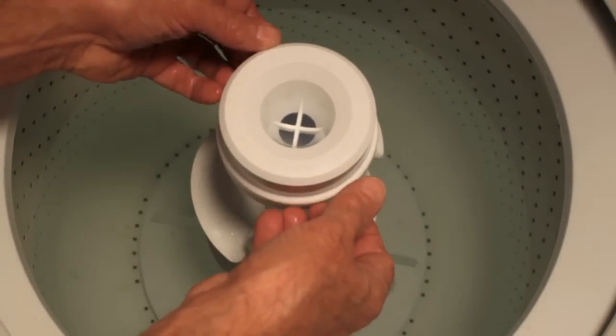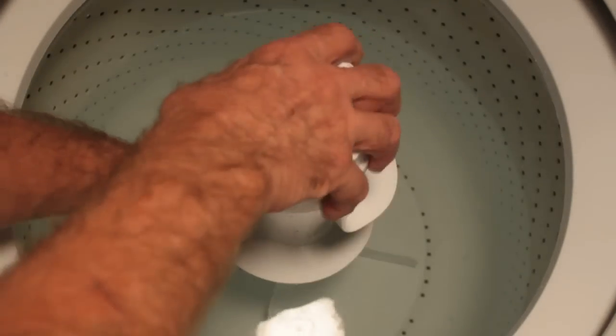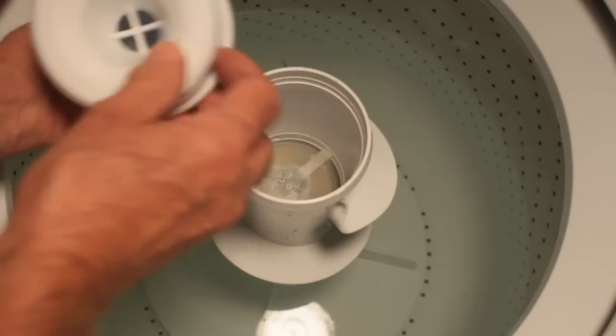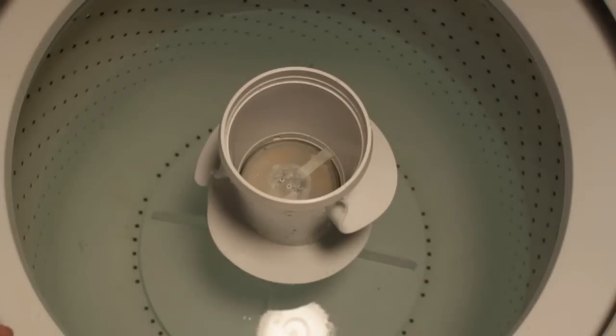So we're going to take this apart and show you what's in there. First thing we do is take this here, which is for the fabric softener if you use that. Once you get that out, you can clean that off. Basically all you do, you don't take this apart, you just rinse it out with warm water. Set that aside.